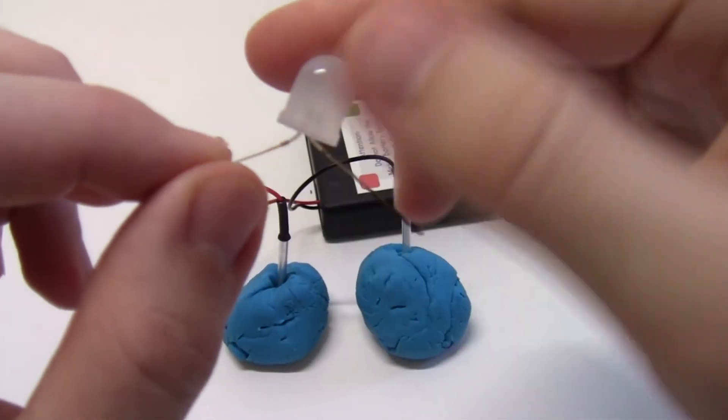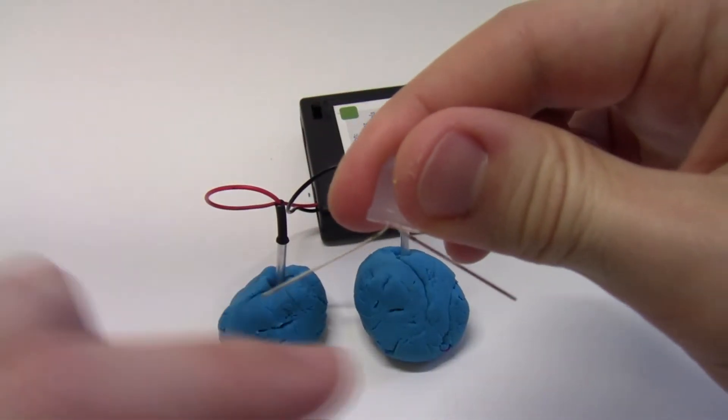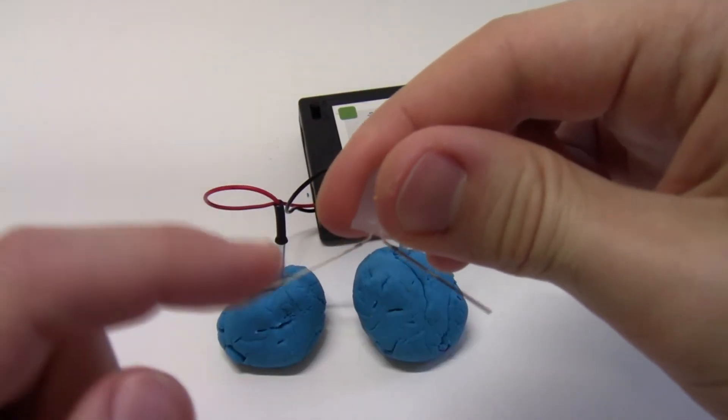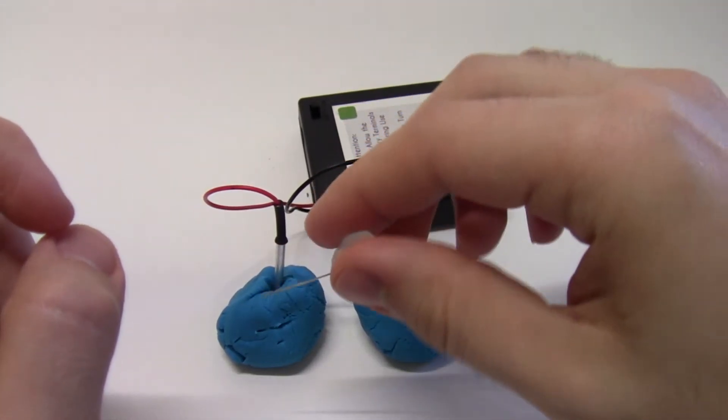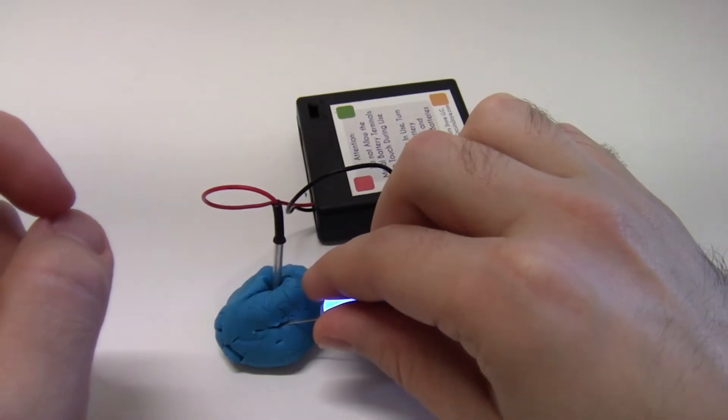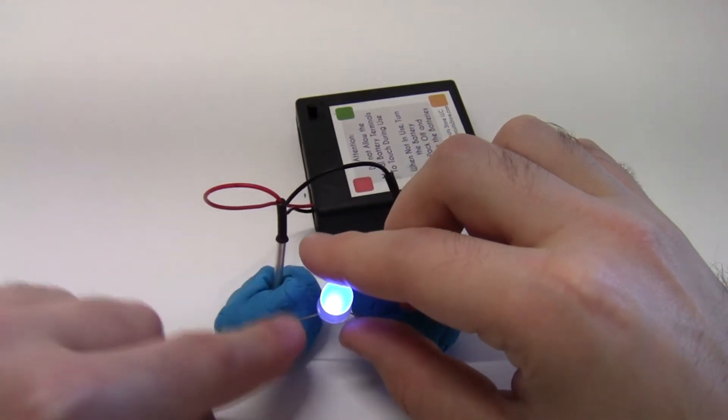You can tell which way to plug in the LED by looking closely at the metal legs, one of which is slightly longer than the other. You want to plug the longer leg into the Play-Doh connected to the red wire, and the shorter leg into the Play-Doh connected to the black wire, and this should ensure that your LED lights up.